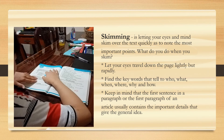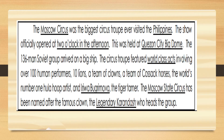You may write the summary in a complete sentence or two, just like in the example presented on the next slide. Here's the example: The Moscow Circus was the biggest circus troupe ever to visit the Philippines. The show officially opened at 2 o'clock in the afternoon and was held at Quezon City Big Dome. The 136-man Soviet group arrived on a big ship. The circus troupe featured world-class acts involving over 100 human performers, 10 lions, a team of clowns, a team of Cossack horses, the world's number one hula hoop artist, and Iriwa Bogrimuva, the tiger tamer. The Moscow State Circus has been named after the famous clown, the legendary Karandash, who heads the group.